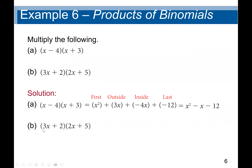The next example uses the same FOIL approach. For (3x plus 2)(2x plus 5): 3x times 2x gives 6x squared. 3x times 5 gives 15x. Then 2 times 2x gives 4x. And 2 times 5 gives 10. Combining like terms: 15x plus 4x gives 19x. So the final answer is 6x squared plus 19x plus 10.